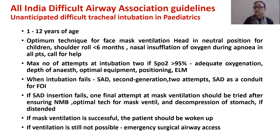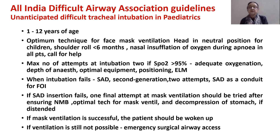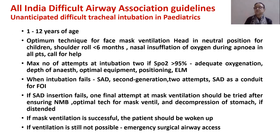The All India Difficult Airway Association guidelines for unanticipated difficult tracheal intubation in pediatrics cover ages 1 to 12 years. Optimal technique includes head in neutral position and a shoulder roll in children less than 6 months. Nasal insufflation of oxygen during apnea is required for all patients, and help should be called. The maximum number of intubation attempts is 2. If SpO2 is above 95% with adequate oxygenation, optimize depth of anesthesia, equipment, positioning, and external laryngeal manipulation. If intubation fails, use supraglottic airway devices — particularly second-generation devices — with two attempts.